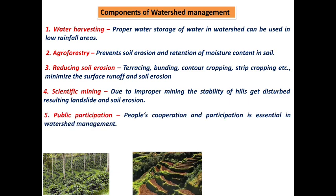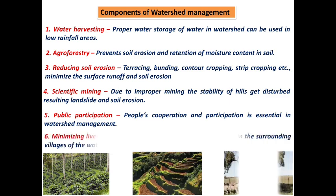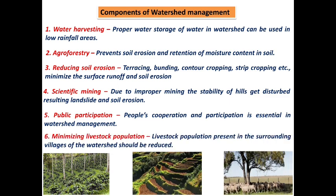The fifth component is public participation: people's cooperation and participation is essential in watershed management, especially for protecting freshly planted areas and maintaining water harvesting structures implemented by the government. The sixth component is minimizing livestock population: if livestock population is present in surrounding villages of a watershed, it should be reduced, because the debris and waste from livestock reaches the watershed via surface runoff very quickly and pollutes it. These are the six components of watershed management.